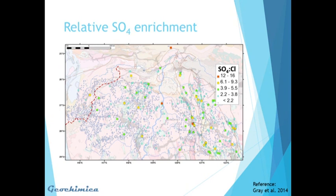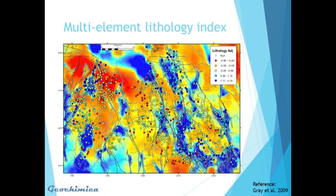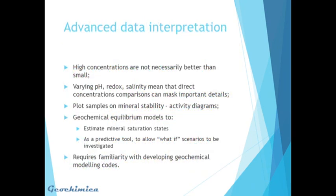We can look at a map of sulfate enrichment relative to the seawater sulfate-to-chloride ratio, which highlights areas where we're getting sulfate enrichment — this may or may not reflect oxidizing sulfides. Comparing this with depleted nitrate values can put you onto areas to follow up. A multi-element lithology index — again from the work of Gray and co-workers — uses a simple additive and subtractive index to highlight areas where mafic and felsic lithologies can be mapped out using groundwater. This is shown on a gravity map from Geoscience Australia, and the mafic areas shown in blue correspond well with the blue colored dots.